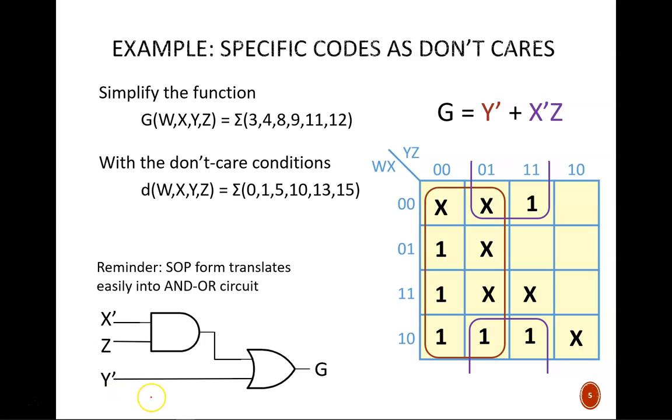Note what this circuit accomplishes for us. If we substitute in any binary codes for function G, the output is guaranteed to be 1. For example, in the code for decimal 12, W is 1, X is 1, Y is 0, and Z is 0. As a result, G equals 1.